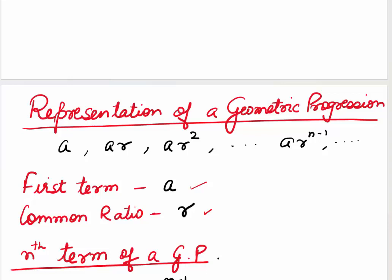How do we get this geometric progression? Start with the first term a, multiply by r to get the second term ar. Multiply the second term by r to get the third term ar². So, whenever the previous term is multiplied by the common ratio, we get the next term.